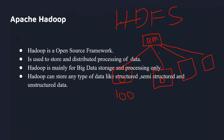You can also process the data in parallel. The MapReduce framework allows Hadoop to do parallel processing. So Hadoop is mainly for big data storage and processing.